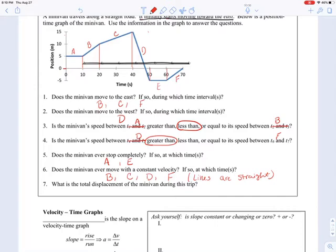And finally, what is the total displacement of the minivan during this trip? So the total displacement, delta X, you find by doing X final minus X initial. Its final position at 70 is zero. So final X is zero. Its initial position before time zero or before A is five. So zero minus five is negative five meters, and that is its total displacement.